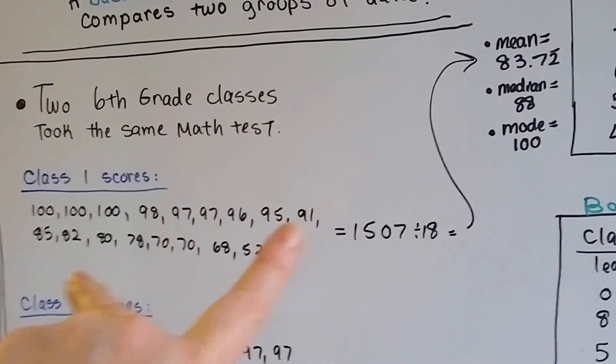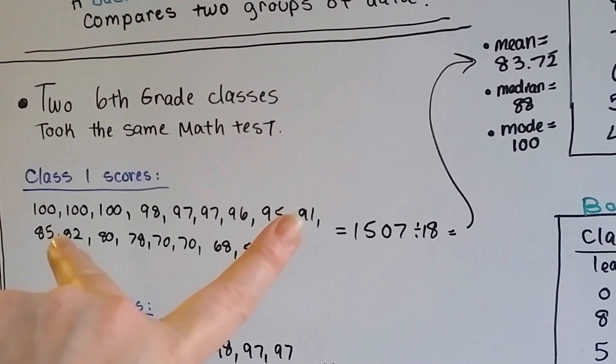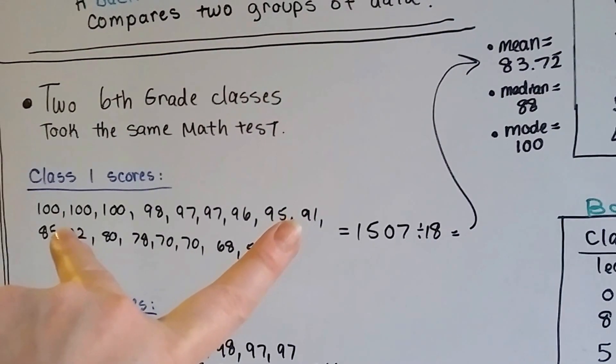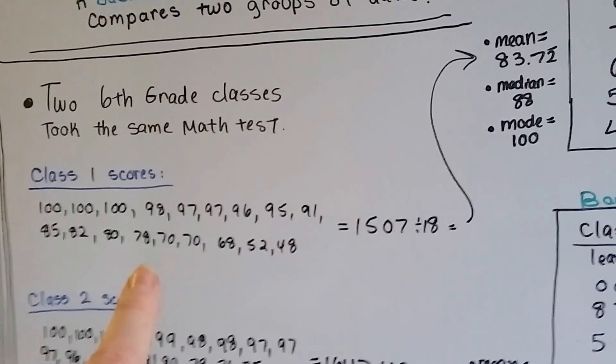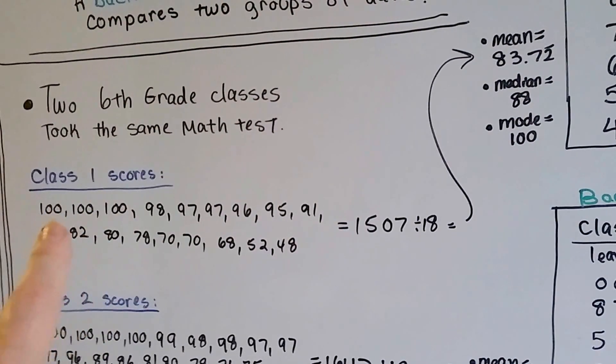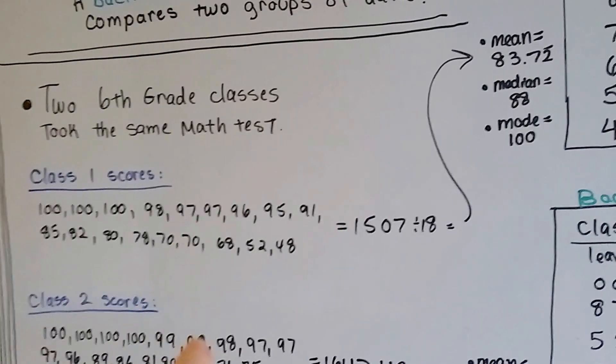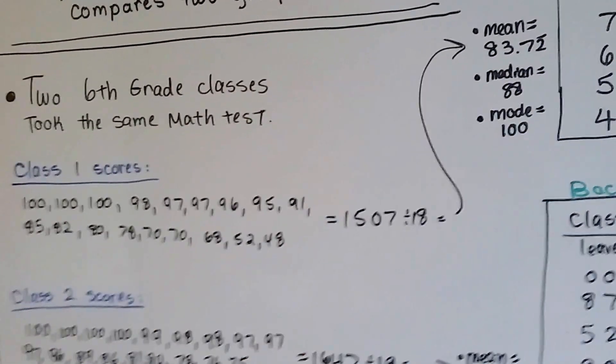But because it's an even number, 18, the middle was 91 and 85. So what we did was we found the average for these two, which was 88. The mode is the number that appears most often. And 100 is appearing three times, 97 two times, and 72 times, so 100 is the mode.